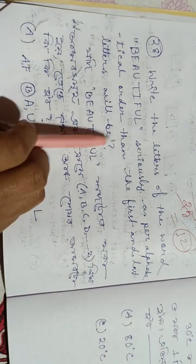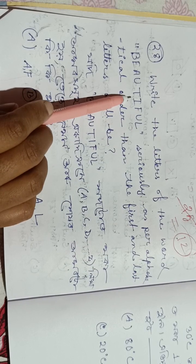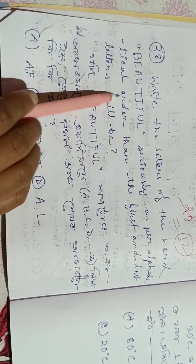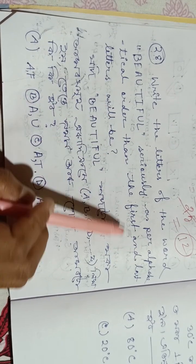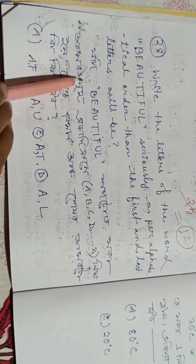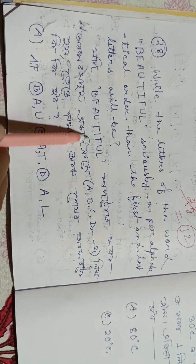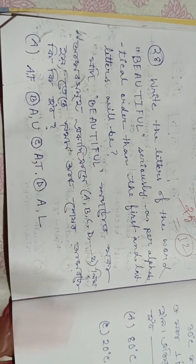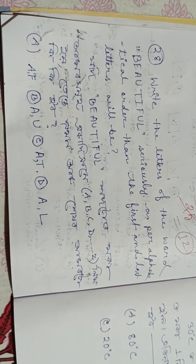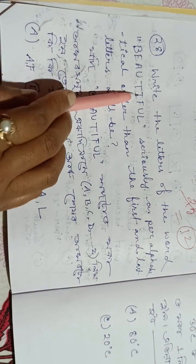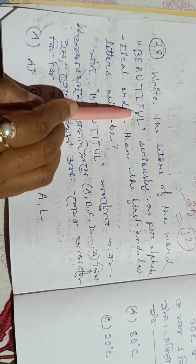Next one: write the letters of the word BEAUTIFUL — B, E, A, U, T, I, F, U, L — in alphabetical order. Then the first and last letters will be... So B, E, A, U, T, I, F, U, L is very important. Written in alphabetical order: A, B, C, D... so we get A, B, E, F, I, L, T, U, U.